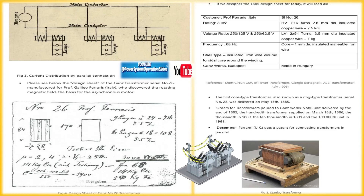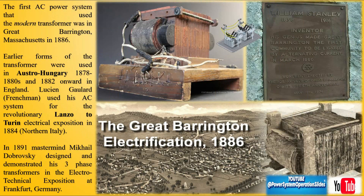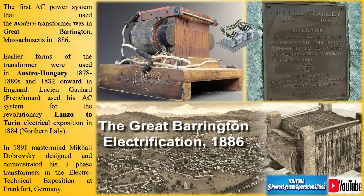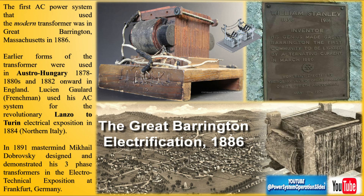By 1837, methods to prevent eddy currents in transformers were developed, leading to the commercial use of direct current electricity and telegraphy by the 1840s. Heinrich Runkorf, Werner Siemens, and others contributed to the advancement of high-voltage technology and alternating current generators.